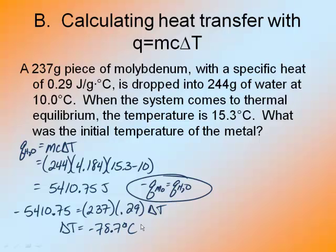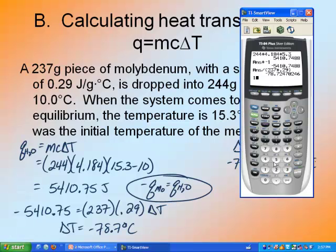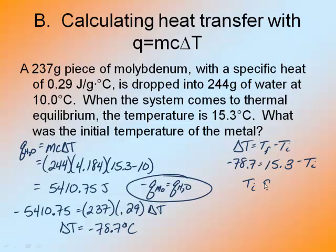Big drop in temperature. So delta T is equal to T final minus T initial. Negative 78.7 is equal to the final temperature 15.3, because again it says equilibrium so it's the same, minus the T initial. So if I take my 15.3 plus negative 1 times the second answer, my initial temperature is 94.0 degrees Celsius.